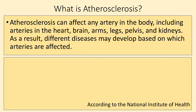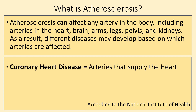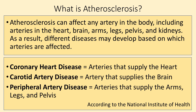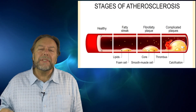Atherosclerosis can affect every artery in the body — blood flow to the arms, legs, kidneys. According to the National Institute of Health, if the arteries to the heart are affected you have coronary artery disease; if the arteries to the extremities are affected you have peripheral artery disease; if the arteries to the brain are affected you have carotid artery disease. Depending on which artery is affected, you'll end up with decreased blood flow and related problems.